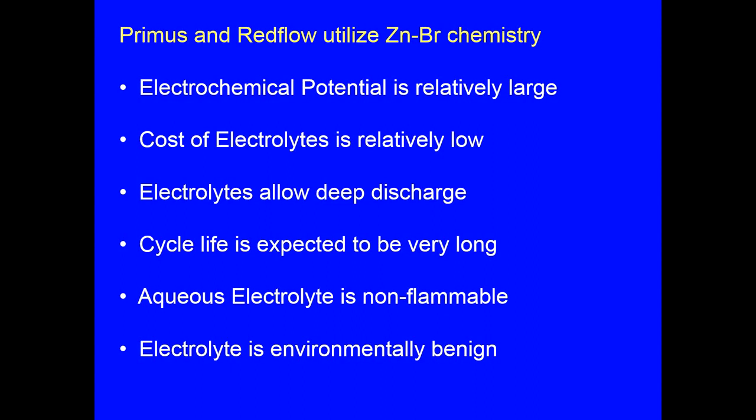Both Primus and Redflow utilize zinc-bromine chemistry. This creates a flow battery, but not a redox battery as such. Advantages of zinc-bromine include: the electrochemical potential is relatively large — more than vanadium-vanadium actually. The cost of electrolytes is relatively low because zinc and bromine are fairly common. The electrolytes allow deep discharge. The cycle life is expected to be very long; essentially these things can be cycled again and again indefinitely. And because it's an aqueous electrolyte, the system is non-flammable and the electrolyte is also environmentally benign.